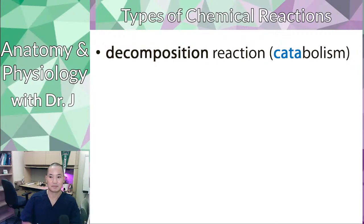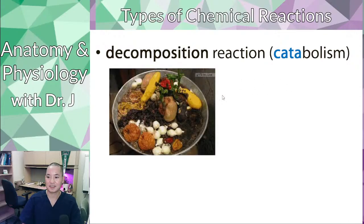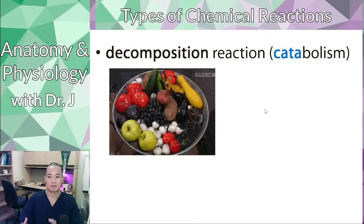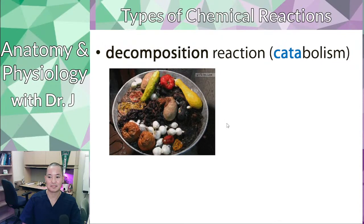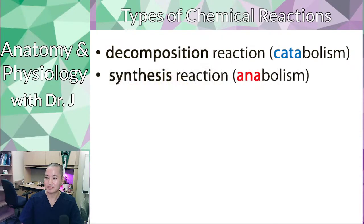The types of chemical reactions you should know: first, a decomposition reaction, also sometimes called a catabolic reaction. When you think of a catastrophe, things fall apart. When something decomposes, like leaves rotting away and breaking down, things start to break down into smaller parts. Decomposition means things are falling apart.